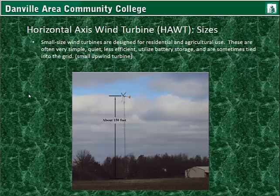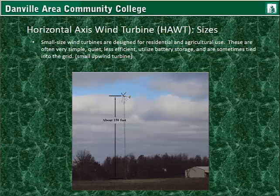Small size wind turbines are designed for residential and agricultural use. These are often very simple, quiet, less efficient, utilize battery storage, and are sometimes tied into the grid. This particular one is a small upwind turbine — the wind passes through the blades first, then across the nacelle. Since it's small, it doesn't have control systems to change its yaw position. The direction of the wind blowing across the tailpiece keeps it facing into the wind, and the blades are pitched mechanically with a passive system.